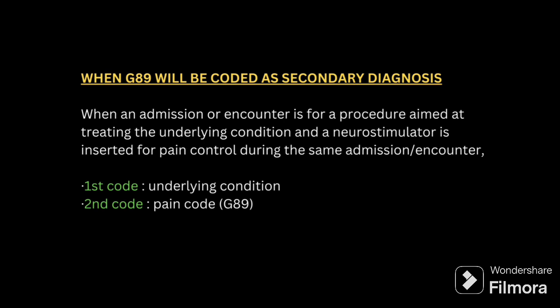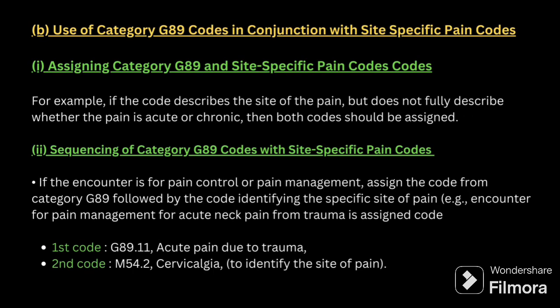G89 will be assigned as a secondary code when an admission or encounter is for a procedure aimed at treating the underlying condition, and pain control is also provided along with it. In that case, the primary code is for the disease condition and the secondary code is assigned for the pain.